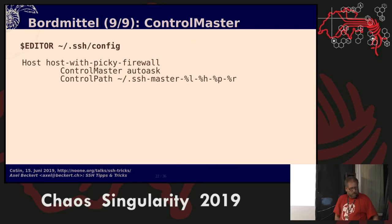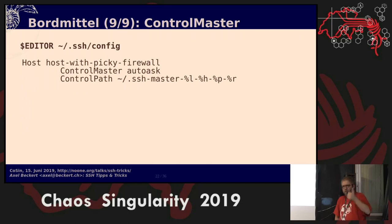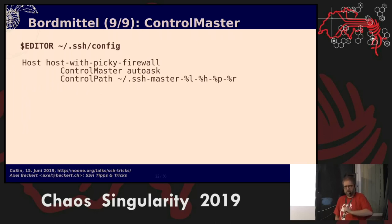ControlMaster and ControlPath: you can use one single SSH connection — one TCP stream — but internally it's multiple streams, so you can have several SSH sessions over the same TCP connection. Some SSH servers only allow one single SSH session, which prevents doing SCP back and forth. With ControlMaster, the first connection is the master and every other connection uses the same TCP stream without opening a new one. It might also help if you have a firewall that blocks you if it sees too many connections in a short time, even if successful.